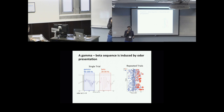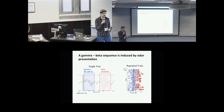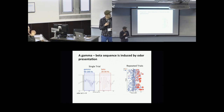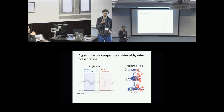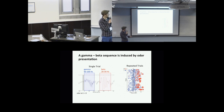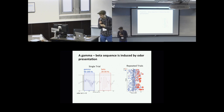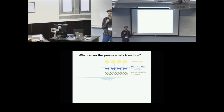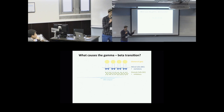Hi everybody, my name is Bo, and I'm a graduate student in Leslie Kay's lab at the University of Chicago. When a rat sniffs an odor, it induces gamma and then beta oscillations in the local field potential in the olfactory bulb in a stereotyped sequence. This transition from gamma to beta happens around 500 to 700 milliseconds after odor onset. My question is: how does this transition actually happen? I want to understand the generation mechanism.